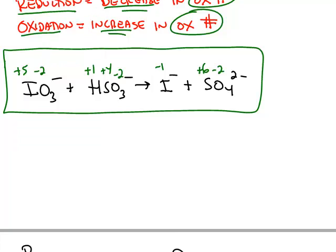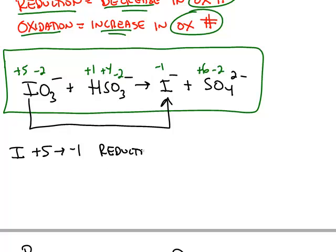Whenever you find one element being oxidized, something else has to be reduced. For example, iodine goes from a +5 down to a -1. That's a decrease in the oxidation number, so it must be a reduction.